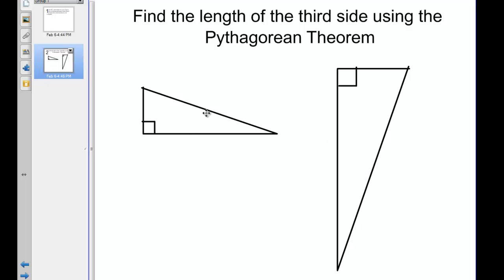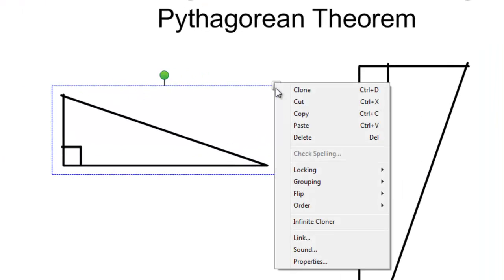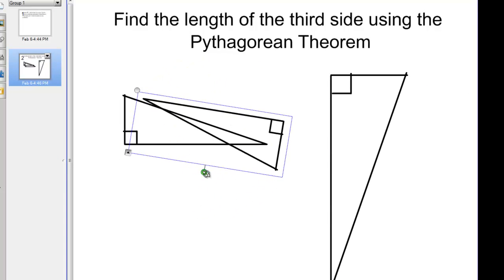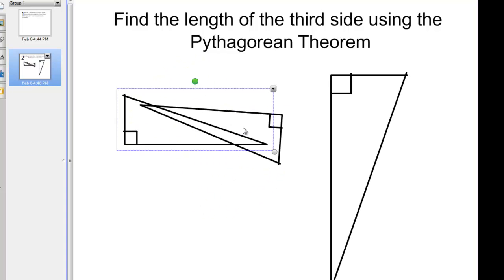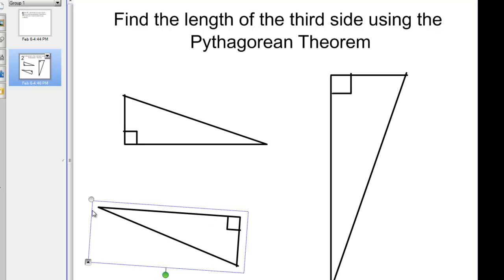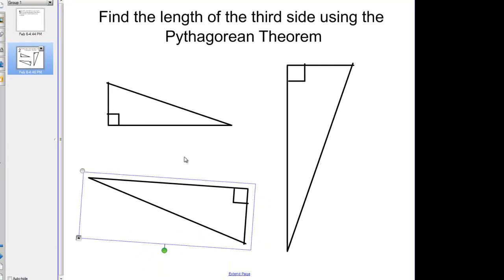Let's clone it another time for a third problem. So I'll spin it. Maybe this time I'll put the right angle on top. And I'll change its size as well. So now we have three different triangles on our screen.